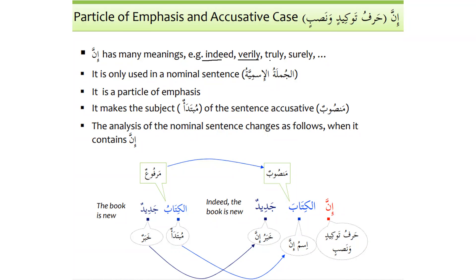Inna has many meanings — indeed, verily, truly, and surely. It is only used in a nominal sentence, al-jumlatul ismiyya, and it is a very important particle of emphasis. It makes the subject, which is mubtada, accusative — it makes it mansoob, gives it nasb. A nominal sentence consists of subject (mubtada) and predicate (khabar). When we say 'alkitabu jadeedun', the book is new — alkitabu is mubtada and jadeedun is khabar, as we learned in Book One.